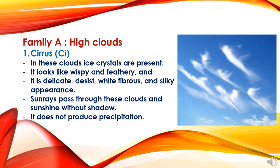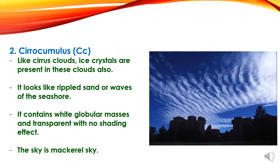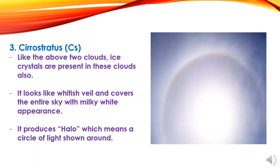The first sub-category is Cirrus Clouds. In these clouds, ice crystals are present. They look wispy and feathery, with a delicate, distinct, white fibrous and silky appearance. Sun rays pass through these clouds and shine without shadow. They do not produce precipitation. The second sub-category is Cirrocumulus. Like Cirrus clouds, ice crystals are also present. It looks like rippled sand or waves of the seashore. It contains white globular masses and is transparent with no shading effect; the sky appears as a mackerel sky. The third sub-category of Family A is Cirrostratus Clouds. Ice crystals are present here too. It looks white and covers the entire sky with a milky white appearance. It produces a halo — a circle of light seen around the sun or moon.